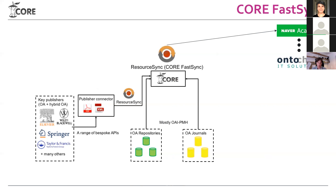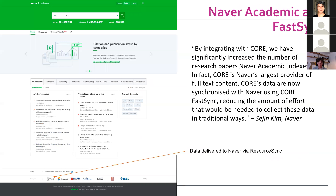One of those commercial players is Naver Academic. We also have a contract with onto-camp Solutions and some others. There seems to be a lot of interest in this, so we developed Core FastSync because there was a demand for it. Naver Academic is ingesting data from CORE using ResourceSync and building a very large search engine for academic literature.